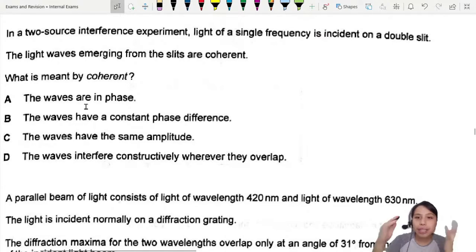Two-source interference experiment, light of a single frequency is shining, which is incident on double slit. The light coming from the slits are coherent. What is meant by coherent?